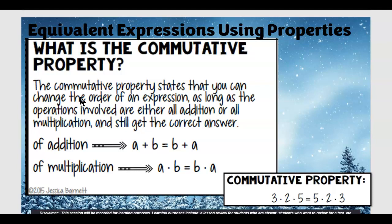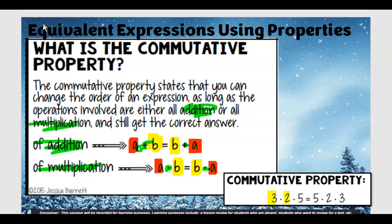More academically stated: you can change the order of the expression as long as the operations involved are either addition or multiplication. They just switched the A and the B — here's A for apple, B for banana. Just trade the apple and banana places and you'll still get the same answer. For example, three times two times five is the same thing as five times two times three. Commutative — commute — change places.